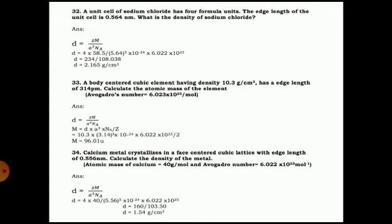Now all these values we put into the density formula: d = Z×M / (a³×Nₐ). Upon substitution and simplification, we get the answer — the density of sodium chloride is 2.16 g/cm³.